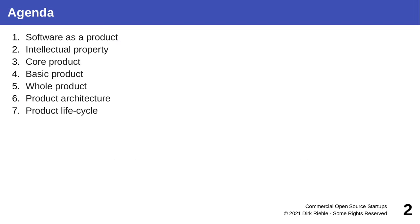We have a lot of ground to cover today, so we will have to look at what intellectual property is, how software products are structured from a business perspective, how product architecture and its lifecycle inform choices about how to structure, build and sell a product.